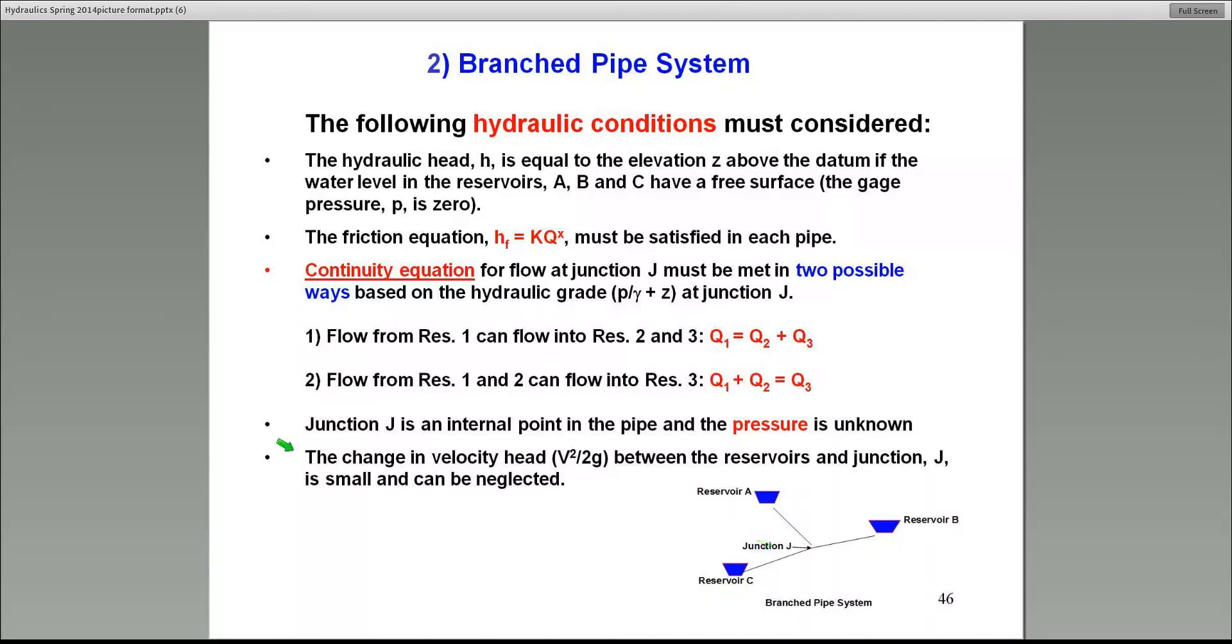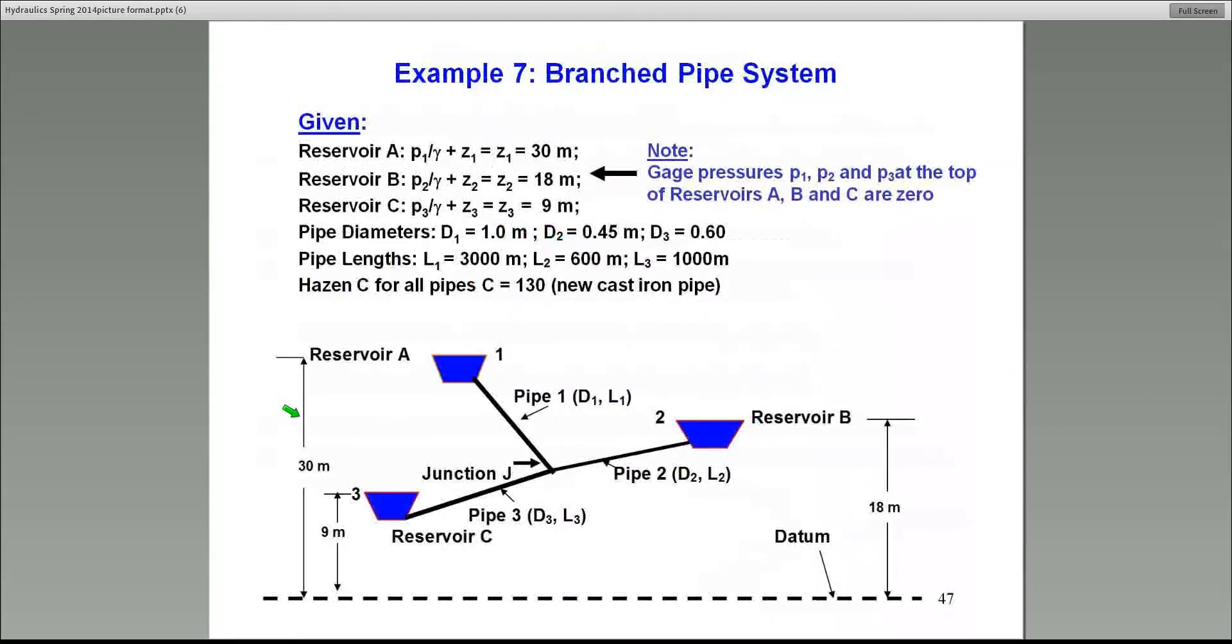We're going to neglect the velocity head, as I pointed out. And J is an internal point, as I just said. The pressure is unknown. It will never be known, and that's not what we are interested in. We are only interested in the total hydraulic head. Let's look at a problem, and that will elaborate this further.